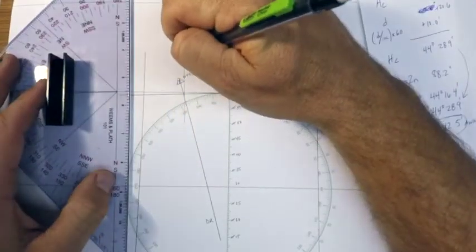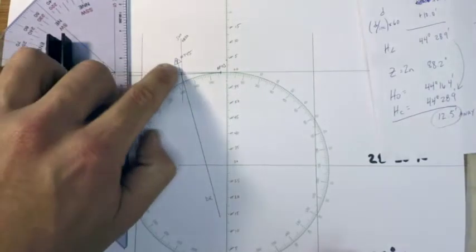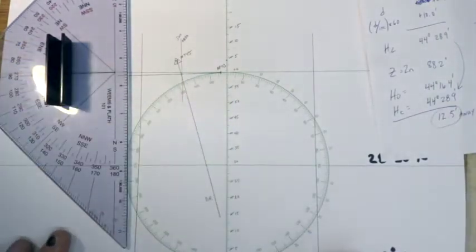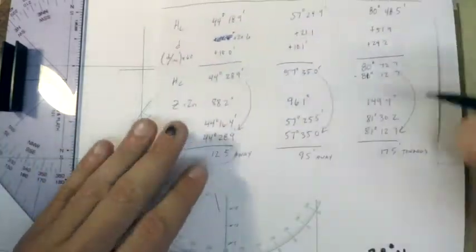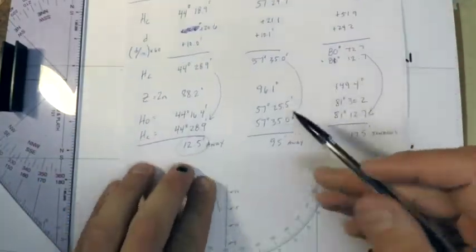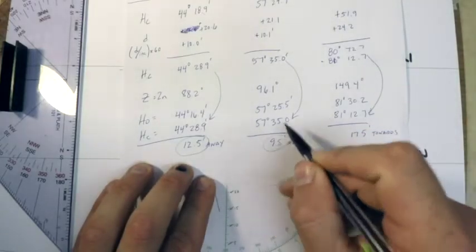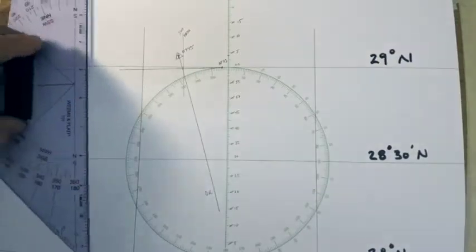I'll just go ahead and label that sun zero eight thirty, and so if I was DR-ing that's a good sign that that's about the right position, but we'll carry on with our next two. The next sight was at 930 and it said we were 9.5 miles away from an azimuth angle of 96.1, so I'll plot that one next.